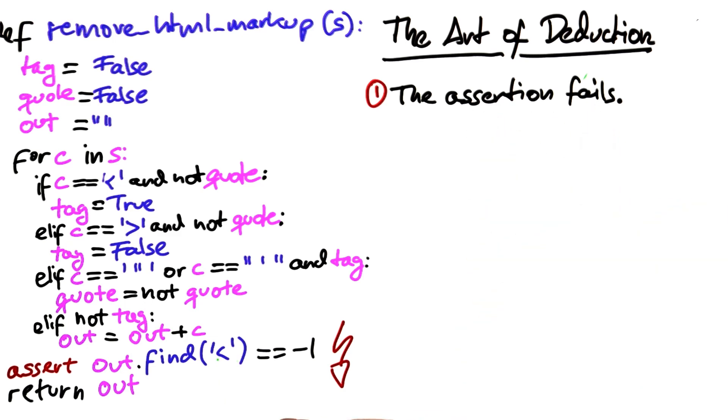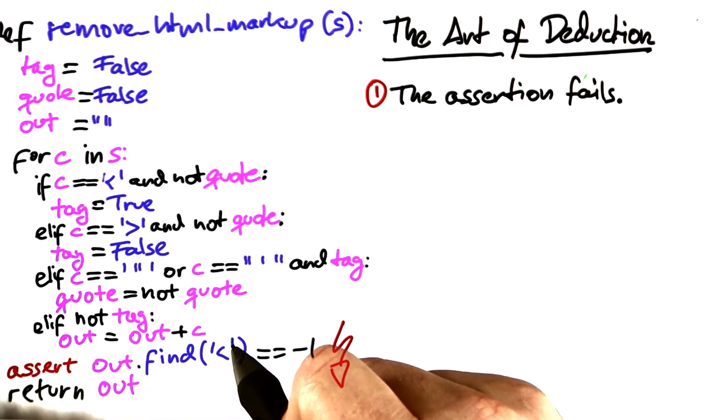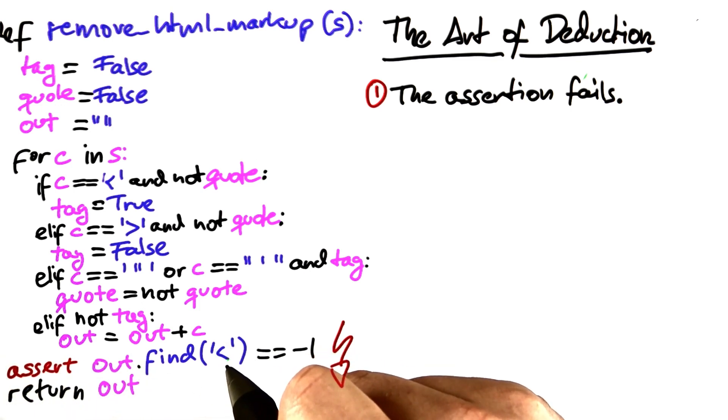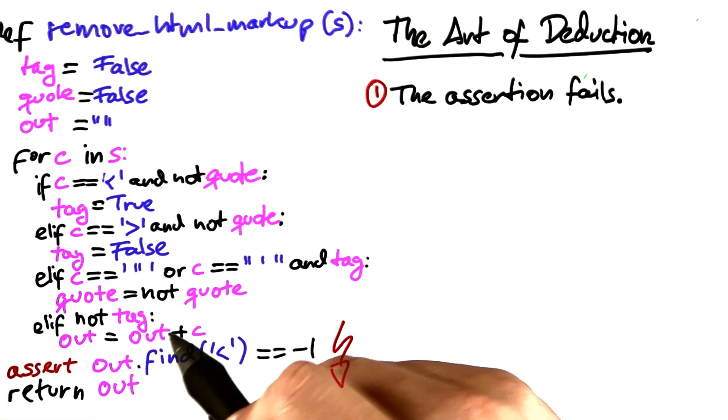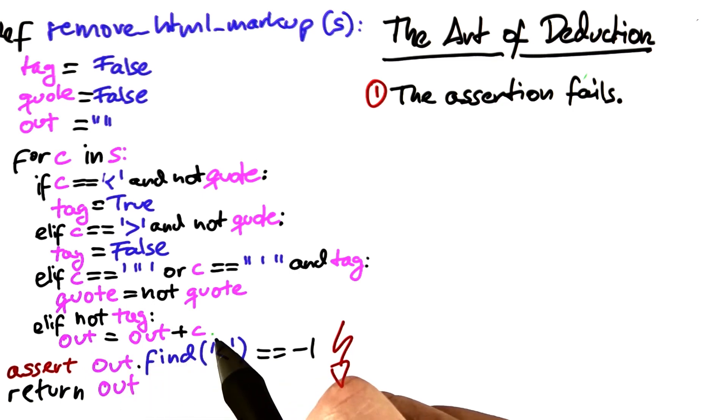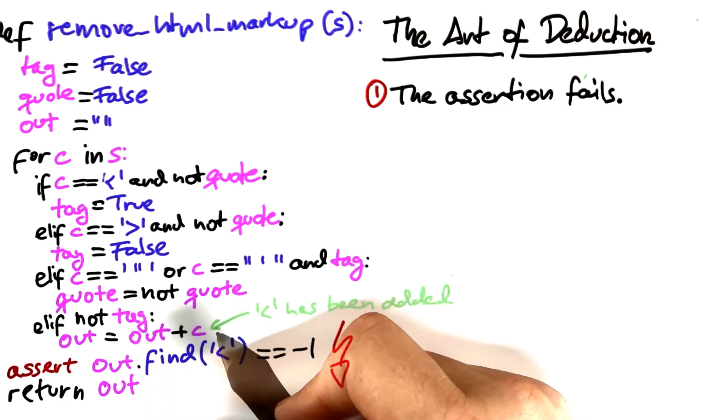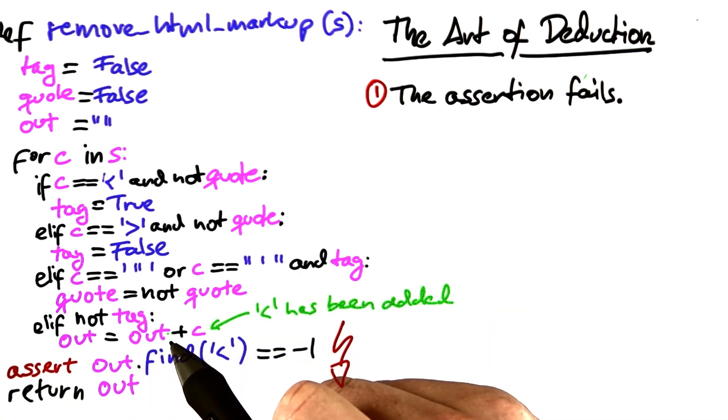Let's think backwards about how the assertion possibly could have failed. What we know is that out contains an opening tag, that is, a less than character. The only place where this character could have been added to the out variable is here.